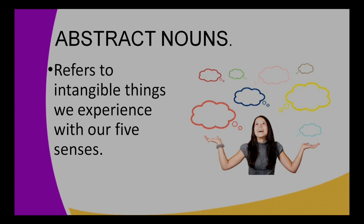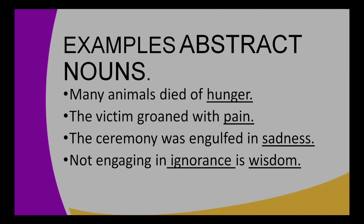Let's move on to abstract nouns. Some feelings or things we experience with our senses fall under this category — they are intangible. Abstract nouns refer to intangible things we experience with our five senses. Examples: Many animals died of hunger — hunger is an abstract noun. The victim groaned with pain — pain is an abstract noun. The ceremony was engulfed in sadness — sadness is also an abstract noun. Not engaging in ignorance is wisdom — ignorance and wisdom are both abstract nouns.